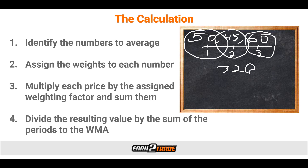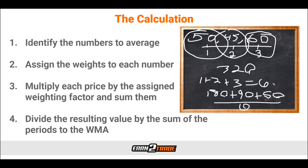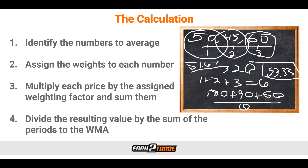Step four: divide the resulting value by the sum of the periods. The sum of the periods is 1 + 2 + 3, which equals 6. So we have 180 + 90 + 50, divided by 6, and this equals 53.33 as a three-period weighted average. The WMA value of 53.33 compares to the SMA calculation of 51.67, to give you an idea. The division by 6 brought us to the weighting sum of 6 divided by 6 equals 1 — which is always a requirement. Remember, it should always add up to 100% or 1.